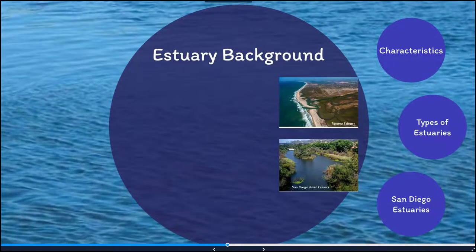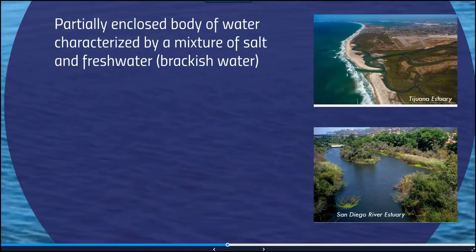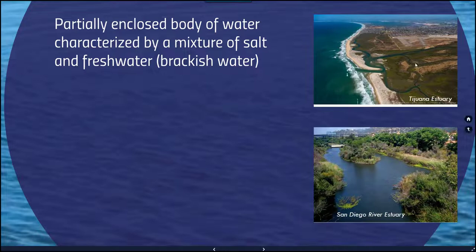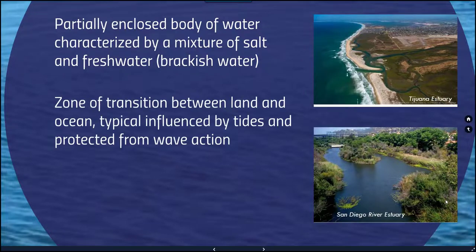Let's take a closer look at estuaries. Estuaries are partially enclosed bodies of water characterized by a mix of salt and fresh water — something we refer to as brackish water. In San Diego, we have the incredibly large Tijuana Estuary — I think it's the largest estuary in our county — and the San Diego River Estuary. There's variability in terms of the layout of those different estuaries.